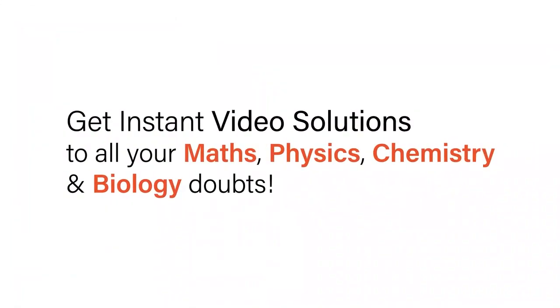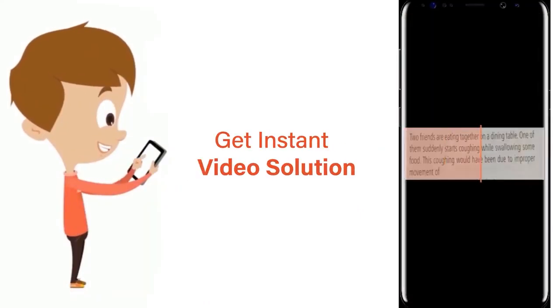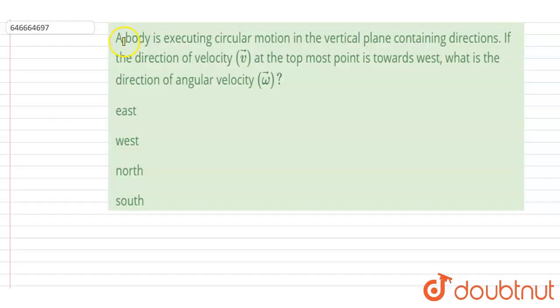With Doubtnut, get instant video solutions to all your maths, physics, chemistry, and biology doubts. Just click the image of the question, crop the question, and get instant video solution. Download Doubtnut app today. Hello everyone, a body is executing circular motion in vertical plane containing direction.